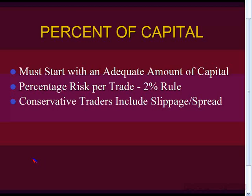So if you have a $10,000 account, you should only be risking $200. If you get stopped out, your largest loss would be $200. And if you're a conservative trader, try to include the spread slippage with that — maybe three or five pips. Try to include that if you really want to be conservative.